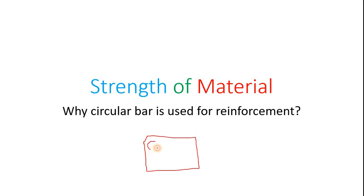You might have seen this is the cross section of beam or column. You might have seen circular bar being used as the reinforcement in concrete. Now we need to know why circular bar is used, not rectangular or square or other shape.